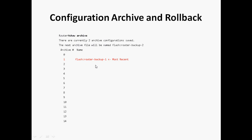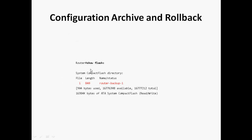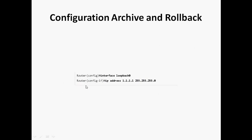After saving, run 'show archive' again — you can now see one configuration file has been backed up and stored in flash memory with the name 'flash: router-backup'. You can also verify it with 'show flash:' in privileged mode, where you will see the file with its size and the name 'router-backup'.